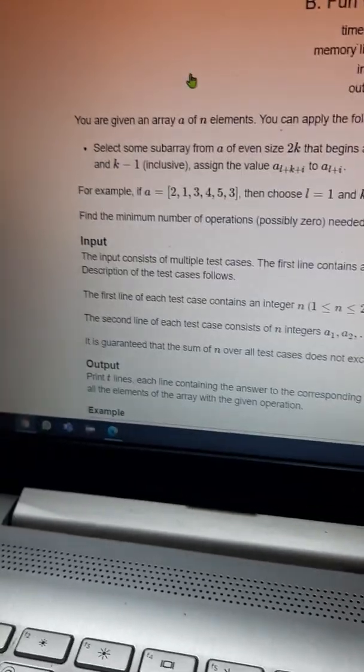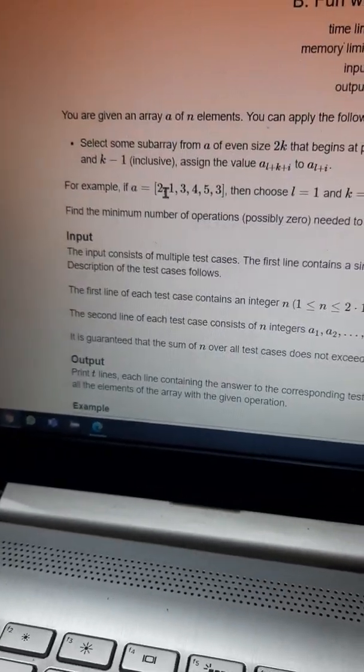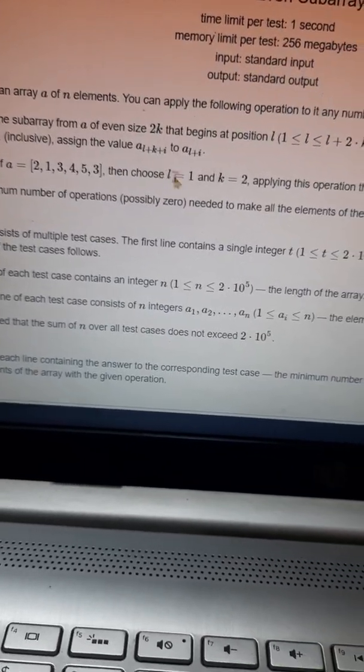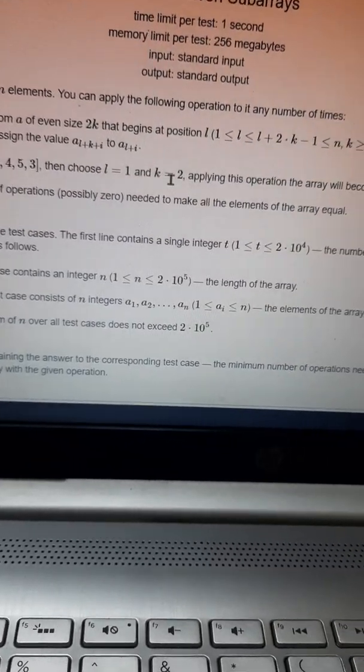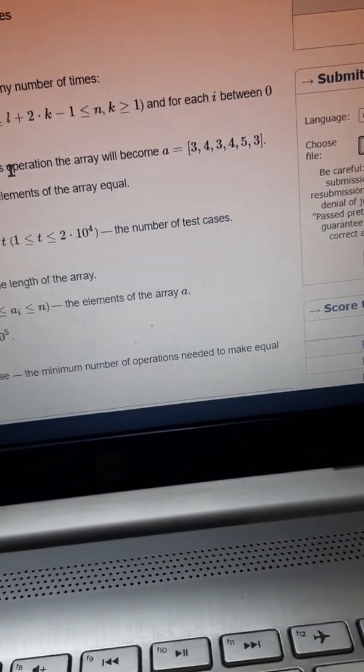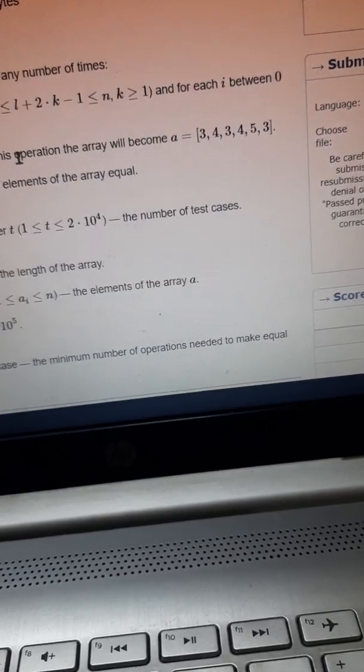For each i between 0 and k-1 inclusive, assign the value a[l+k+i] to a[l+i]. For example, if array a equals [2, 1, 3, 4, 5, 3] and the l and k values are 1 and 2, applying these operations the array will become [3, 4, 3, 4, 5, 3].